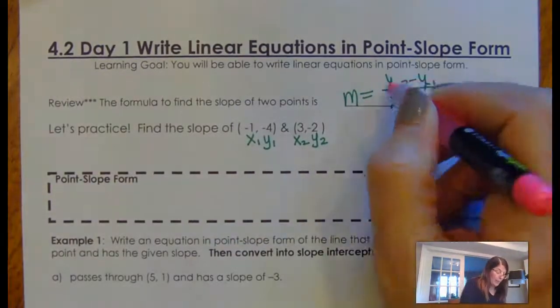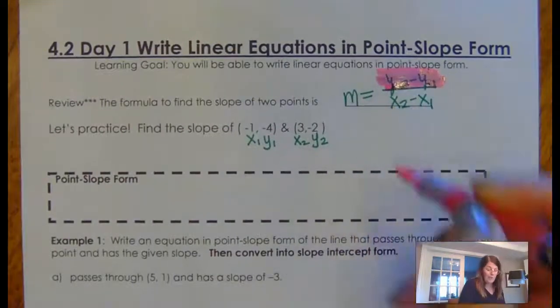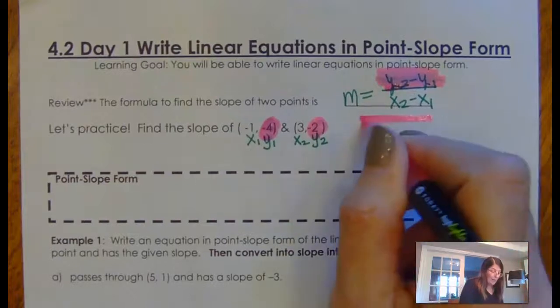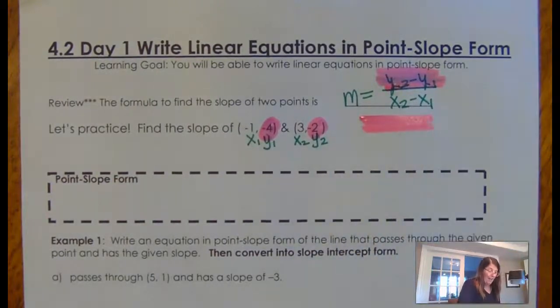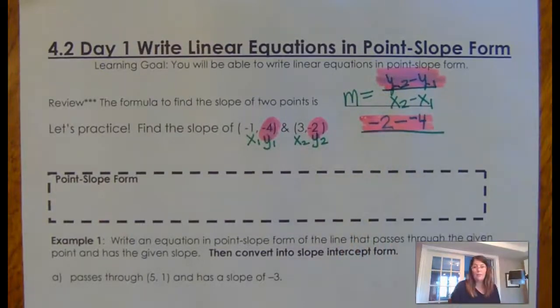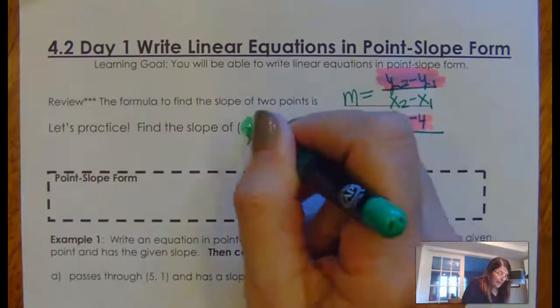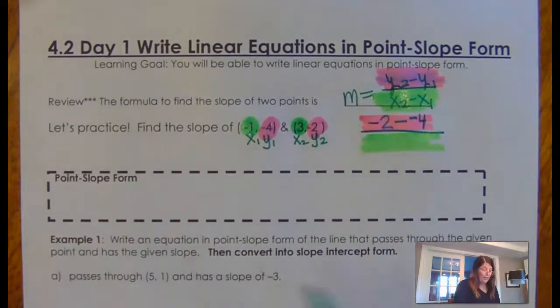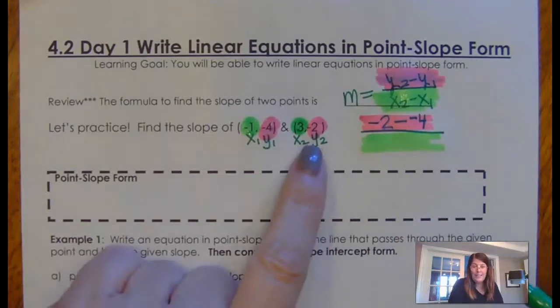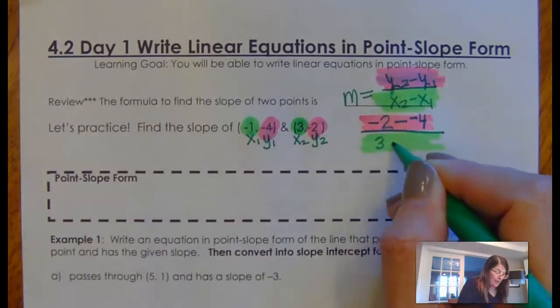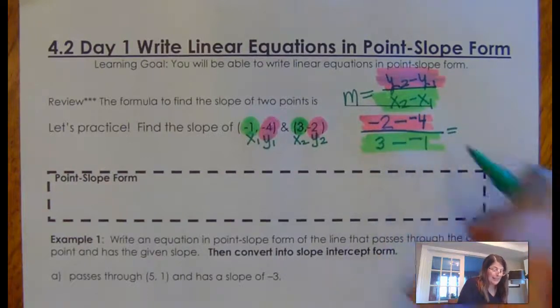And what you need to remember is the change in Y is what always goes on the top. So you're going to subtract the Y's on the top. So when I write these out, I'm going to have negative 2 minus negative 4. Now, don't freak out about that minus negative. And then in the denominator is the change in X. So I'm going to put these X's in the denominator. So it's really important since I started with this negative 2 that I start with the 3. You have to start with the same 1. 3 minus negative 1.